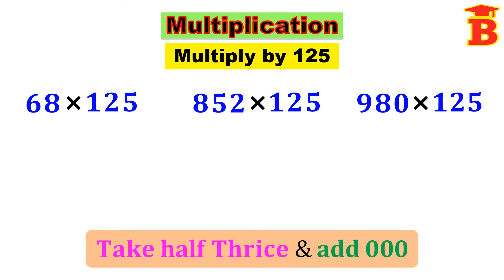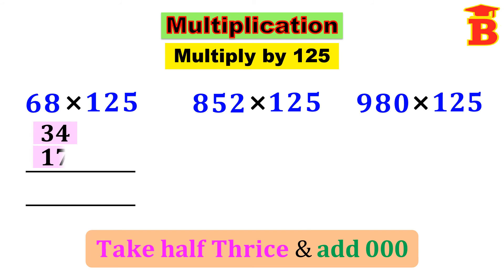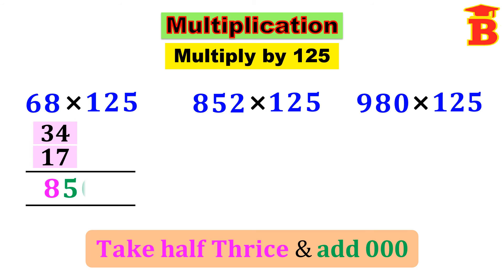See the number is 68. Taking half of 68 we get 34 — this is the first half. Again taking half of 34 we get 17 — this is the second half. Again taking half of 17 we get 8.5 — this is the third half. After that add triple 0 at the back, that means multiply by 1000. For 1 zero we can remove 1 decimal point, and then add double 0 at the back. So we get 8500.